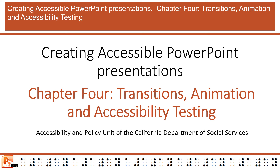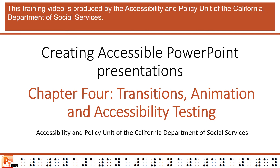Creating Accessible PowerPoint Presentations. Chapter 4: Transitions, Animation and Accessibility Testing. This training video is produced by the Accessibility and Policy Unit of the California Department of Social Services.